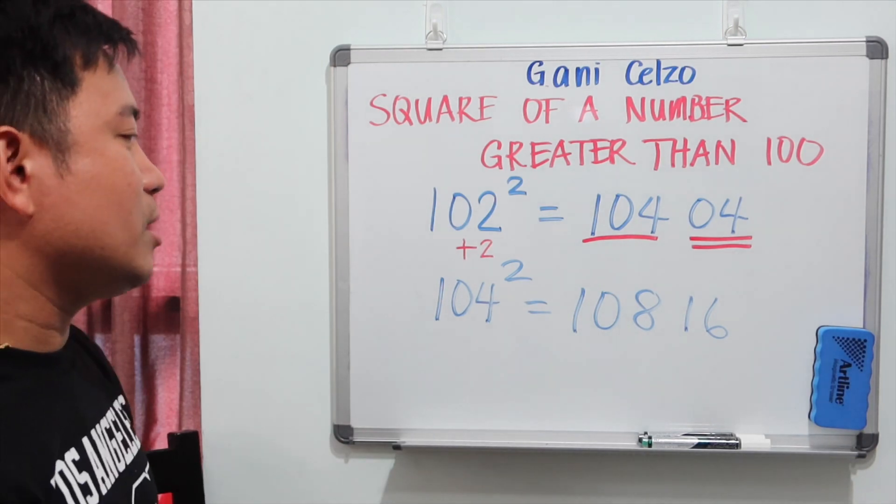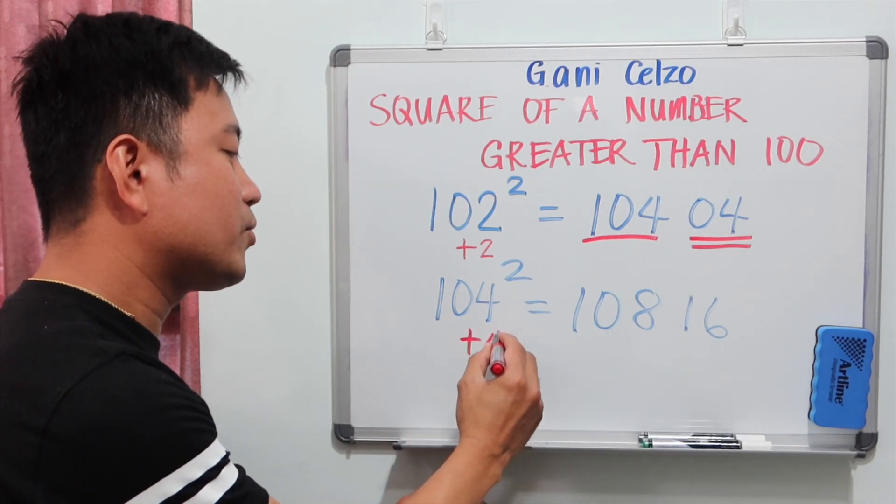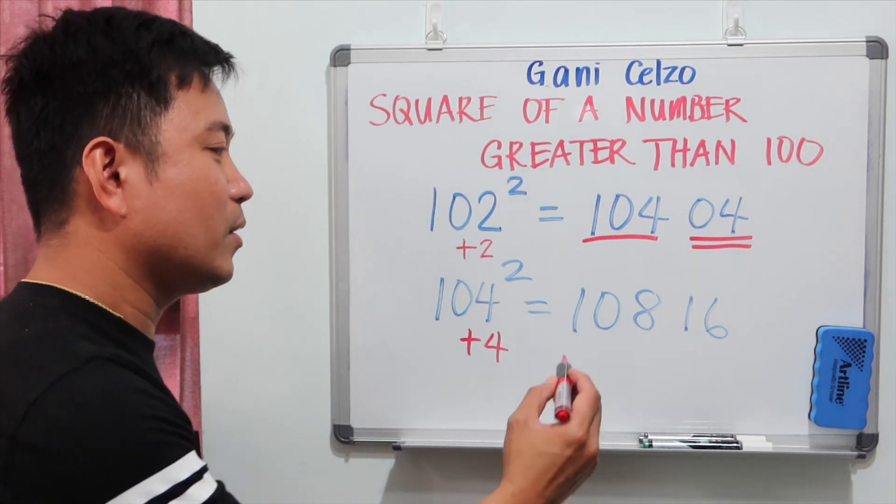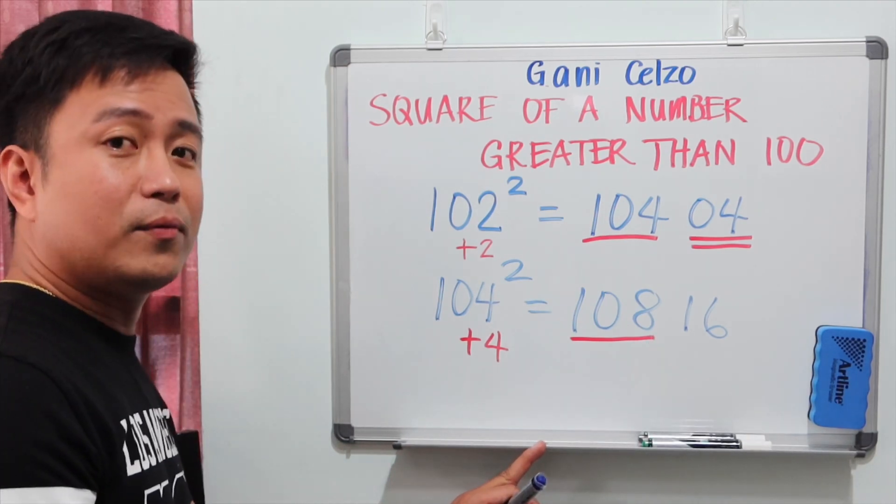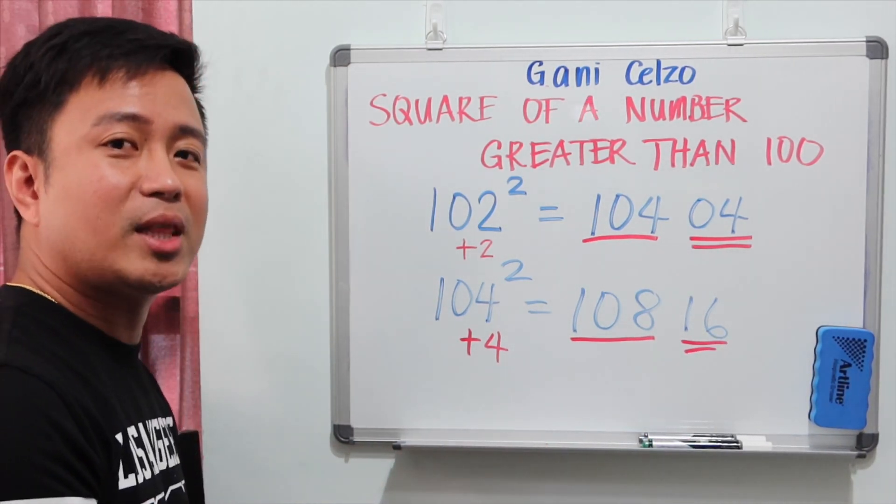You're seeing the same strategy. 104 square. This is 4 away from 100. 4 more than 100. So I'll add 4. That makes it 108. 4 square is 16. So you have 10,816.